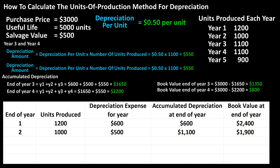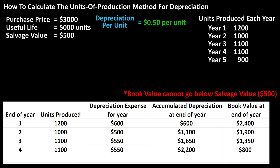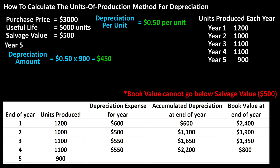Here are the numbers for years three and four. Now for the end of year five — keep in mind that the book value at the end of year cannot go below the salvage value of $500. The units produced were 900, so we put that in. The depreciation expense will be $0.50 times 900 units, which equals $450.